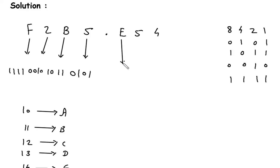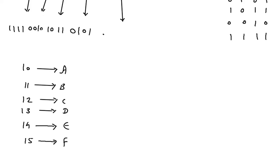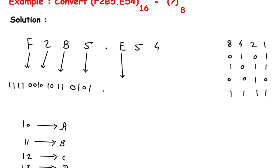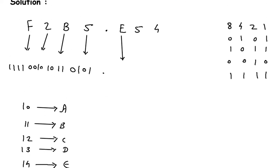Then this E. Here this is a hexadecimal point, so this will be converted into a binary point. E means 14. So 14 means 8 plus 4 plus 2, and this will be 0. So the binary for E is 1, 1, 1, 0.